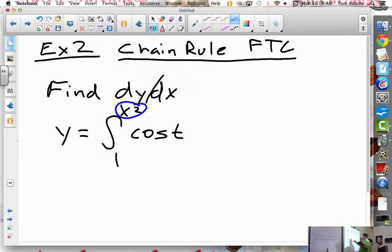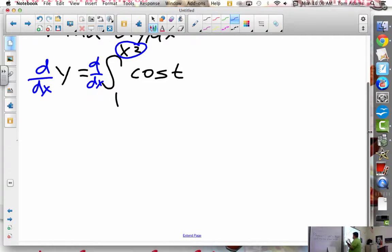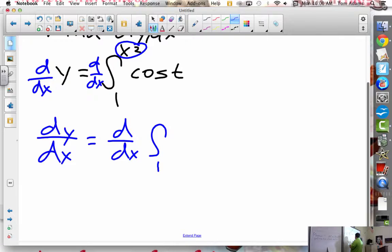So we can use u substitution. In other words, what I want to do is I'm going to say d/dx on one side and d/dx on the other. So then my dy/dx would be, which is what they're asking for, d/dx of the integral from 1 to x squared of cosine of t.